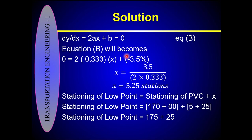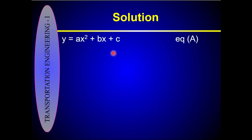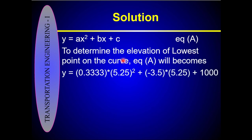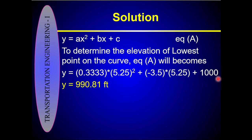To determine the elevation of the lowest point, substitute x = 525 feet into the parabolic equation y = ax² + bx + c. The value of a was already calculated, b is in foot-per-station units (stations cancel directly), and c = 1000 feet. The result gives the elevation of the lowest point on the curve as 990.81 feet.